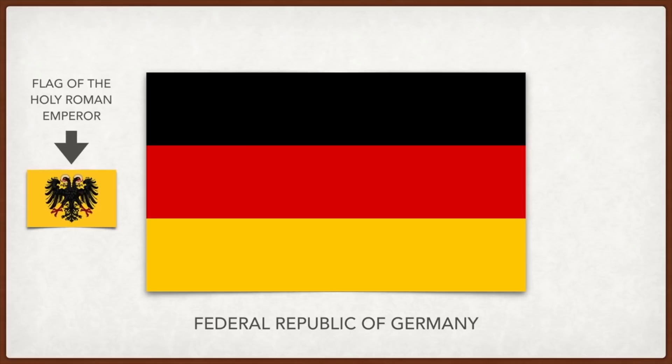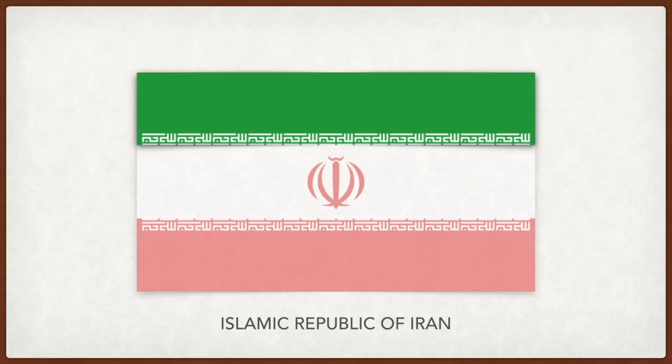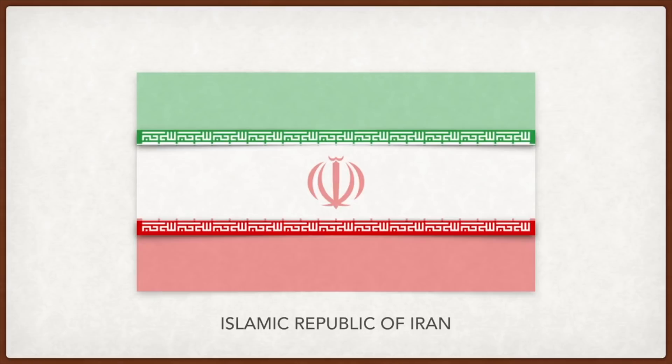Germany: the black, red, and gold have been an important part of German history as far back as the Holy Roman Empire, now symbolic of German unity. Iran: green represents growth, happiness, and unity; white represents freedom; and red represents martyrdom.